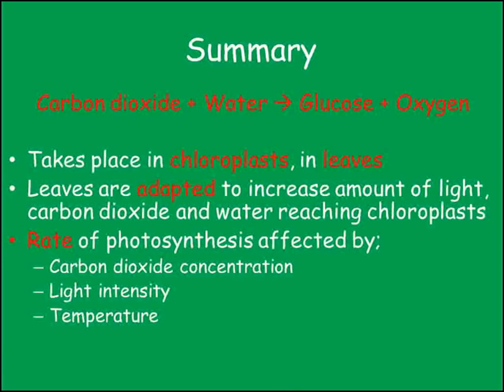So, photosynthesis is how plants make sugar. It takes place in chloroplasts in leaves which are adapted to increase the amount of carbon dioxide, water and light that reach them. The rate of photosynthesis is affected by carbon dioxide concentration, light intensity and temperature.